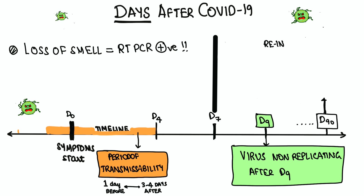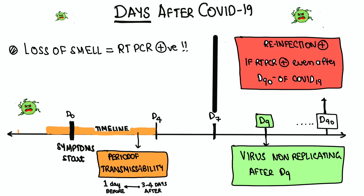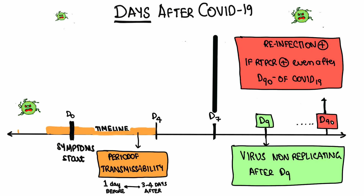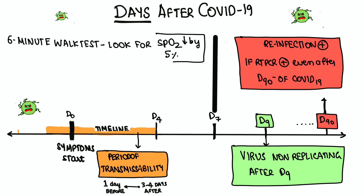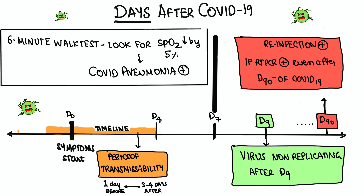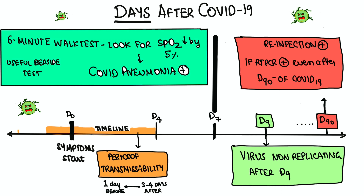After day 90, if RT-PCR is still positive, that indicates reinfection. There is also a simple bedside test for ambulatory COVID patients: they are asked to walk for six minutes and their oxygen saturation is monitored. If saturation falls by five percent from before to after, it indicates COVID pneumonia. This test should be done between day three and day six of illness.